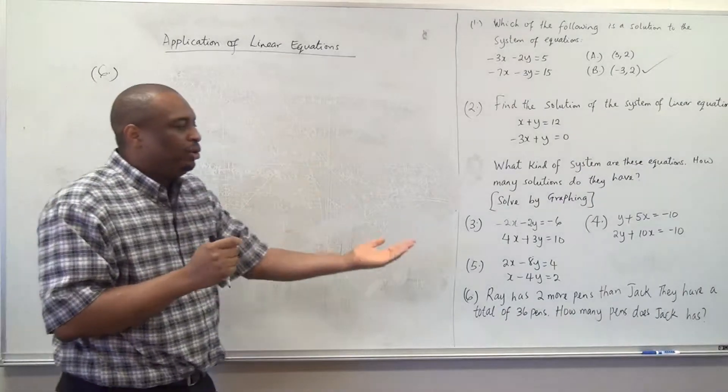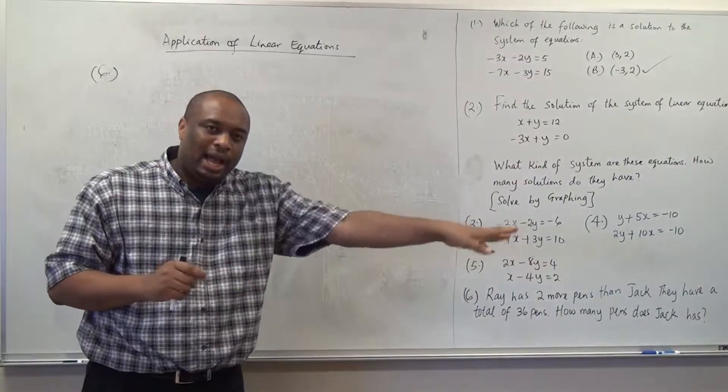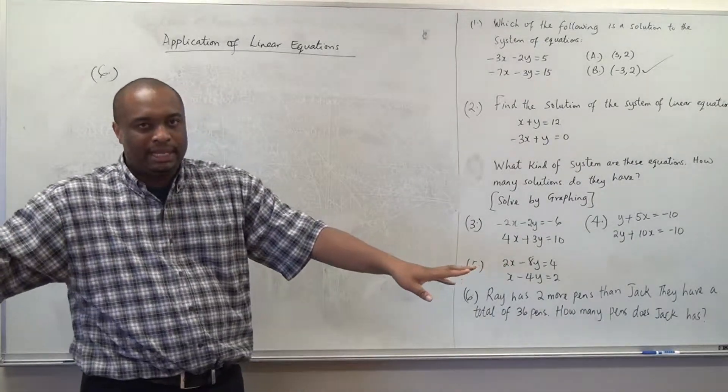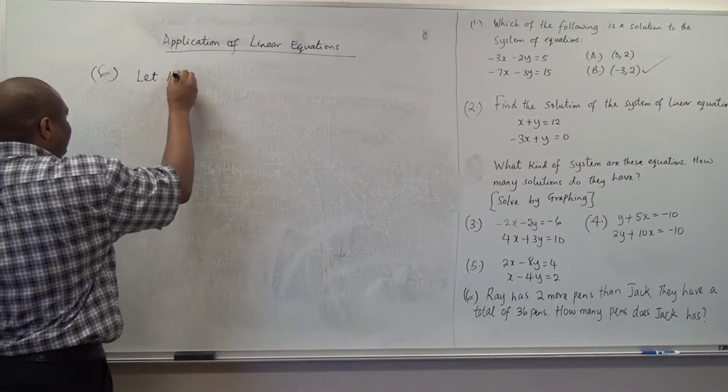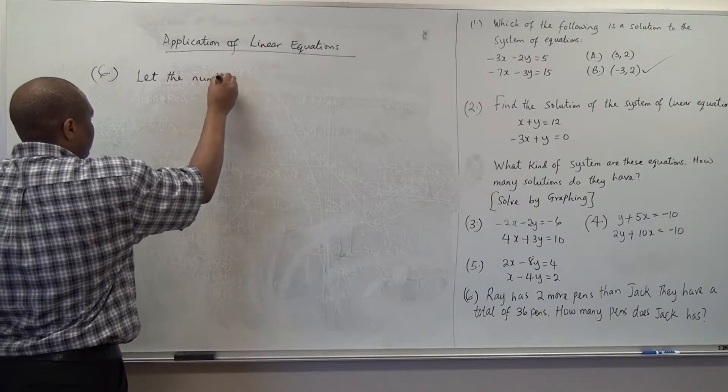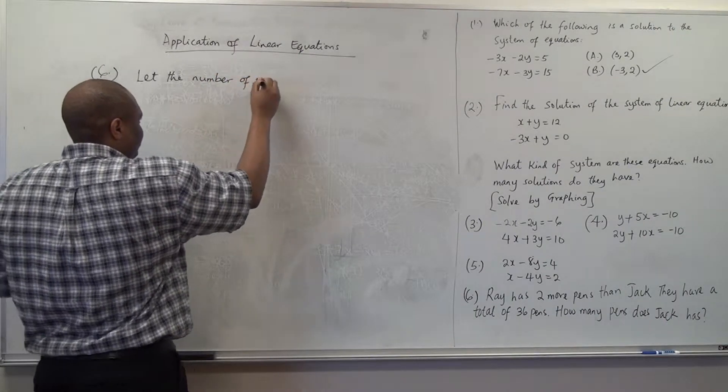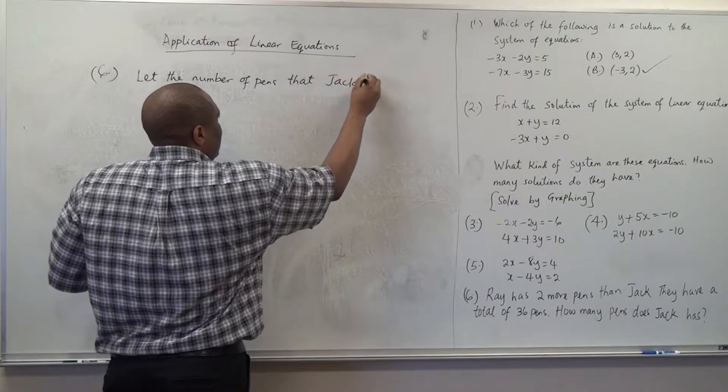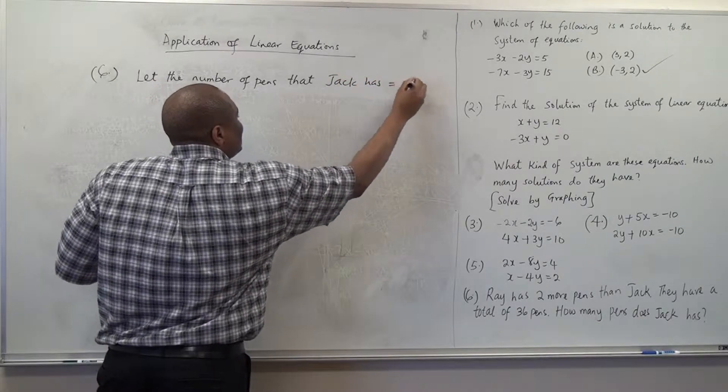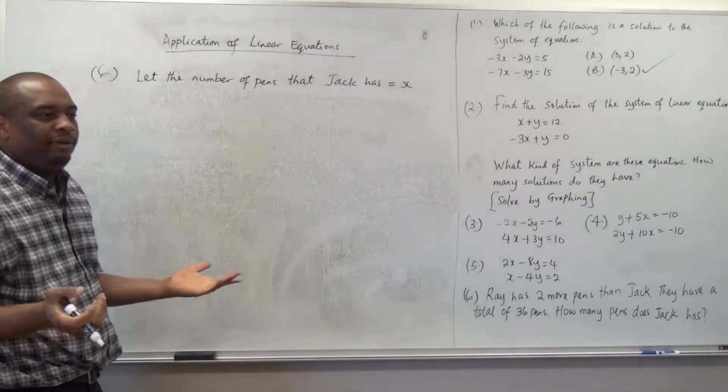Now, we do know that whatever that Jack has, Ray has two more pence than it has. So, let's just say that let the number of pence that Jack has be x. You just assign a variable. We don't know.